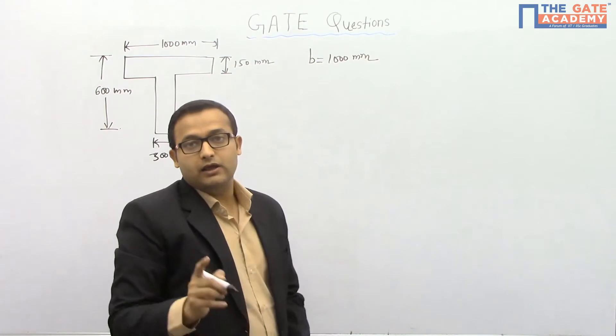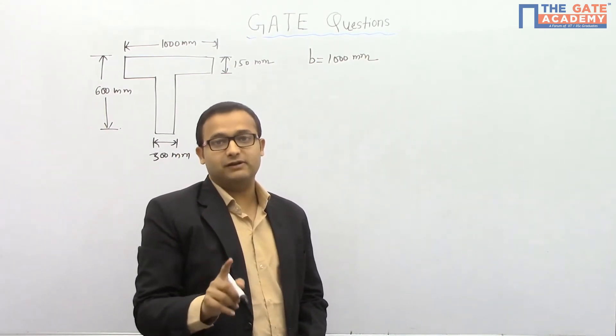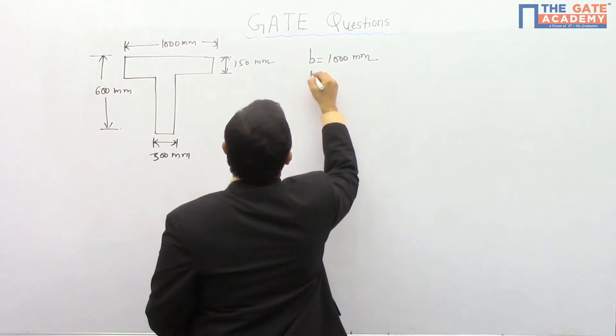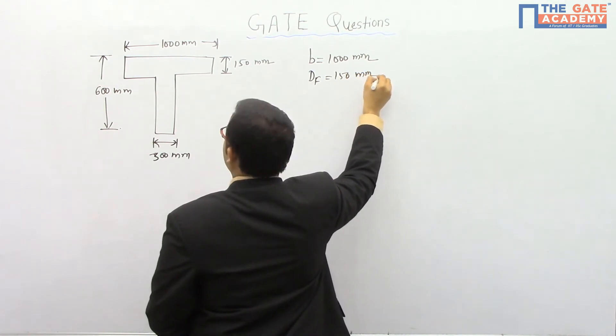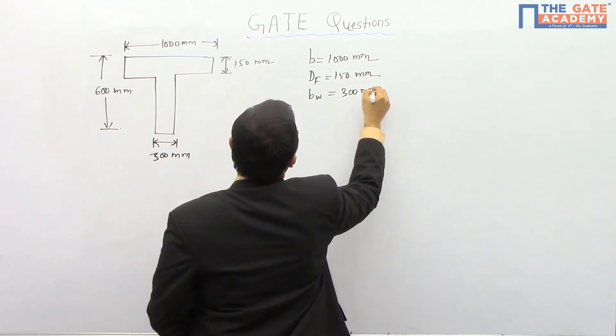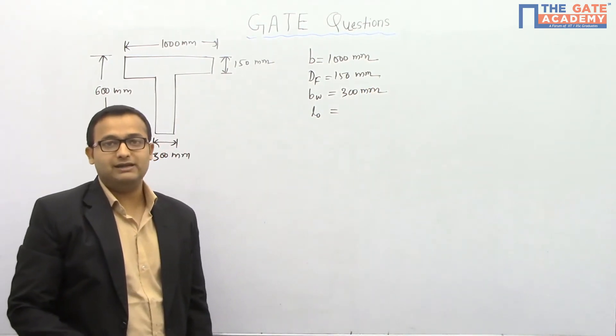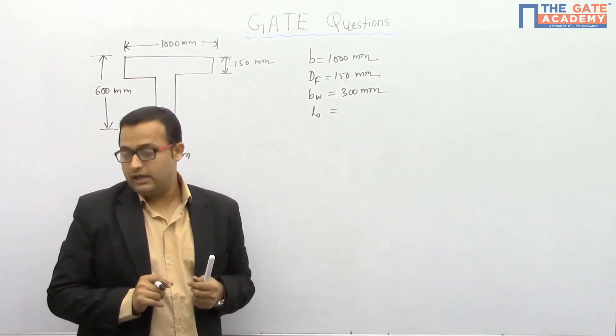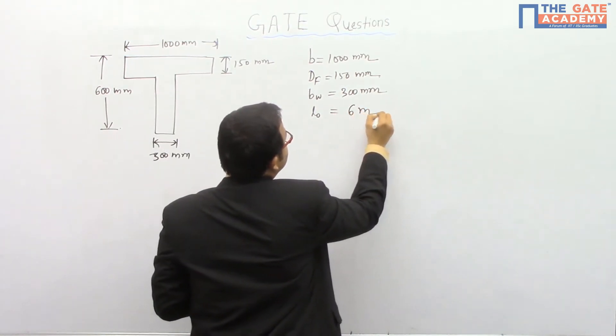You should always remember, effective width of the flange will always be less than actual width of the flange. So B is 1000 mm, depth of flange is 150 mm, width of web is 300 mm. And if the given beam is simply supported, then the distance L0 between the two points of contraflexure will be same as 6 meters.